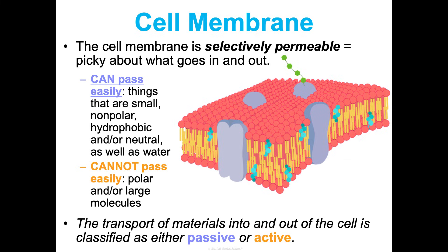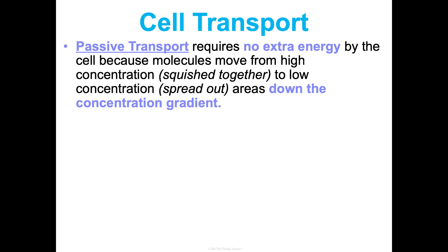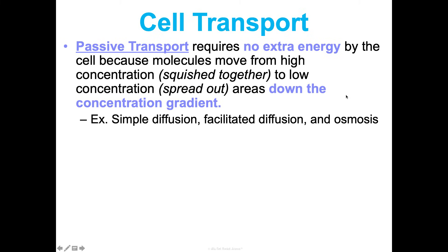Because of these differences in what can go in and out of the cell, transported materials are classified as either passive or active. Passive transport requires no extra energy by the cell. Molecules naturally move from high concentration — where they're really packed together — to low concentration, where they're spread out. This is the movement of molecules down their concentration gradient, like going down a slide. There are three examples: simple diffusion, facilitated diffusion, and osmosis.